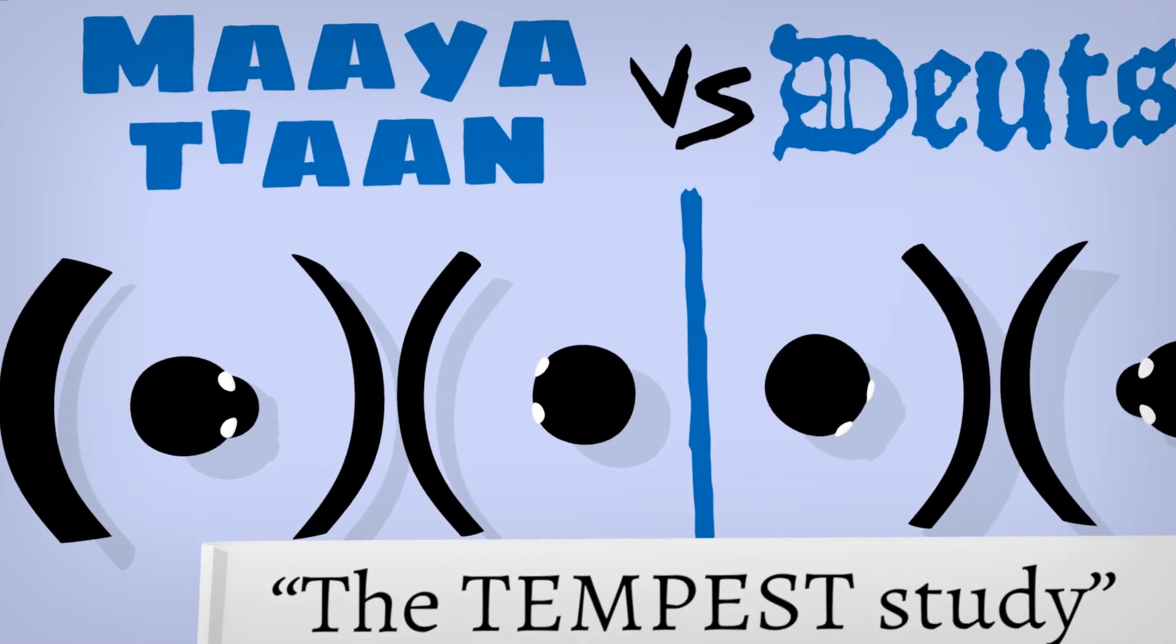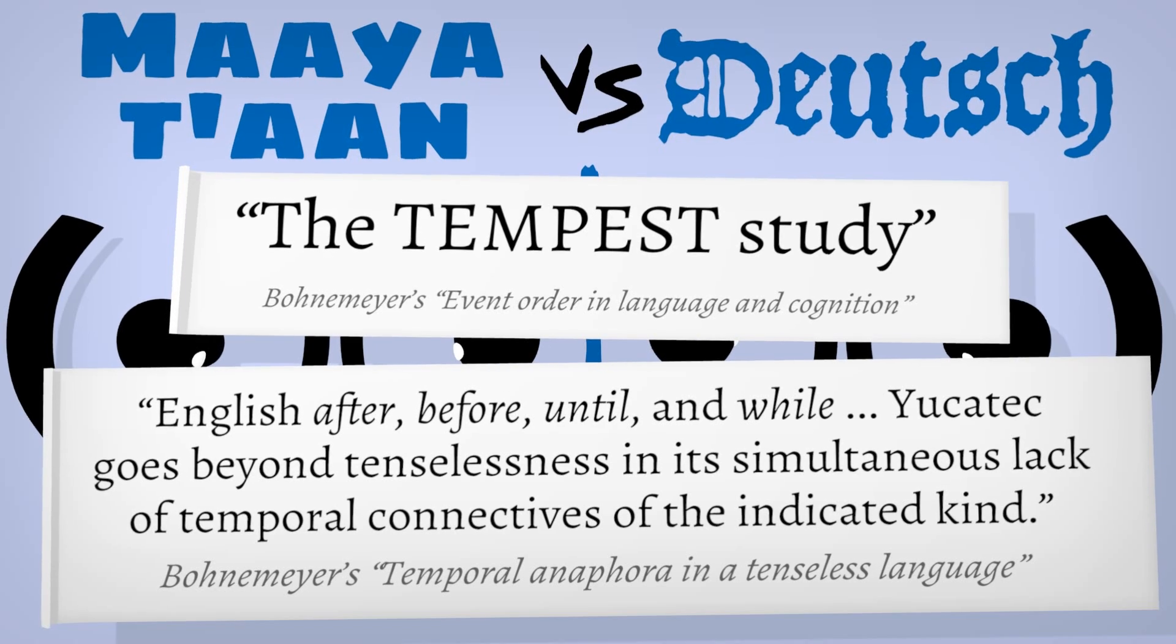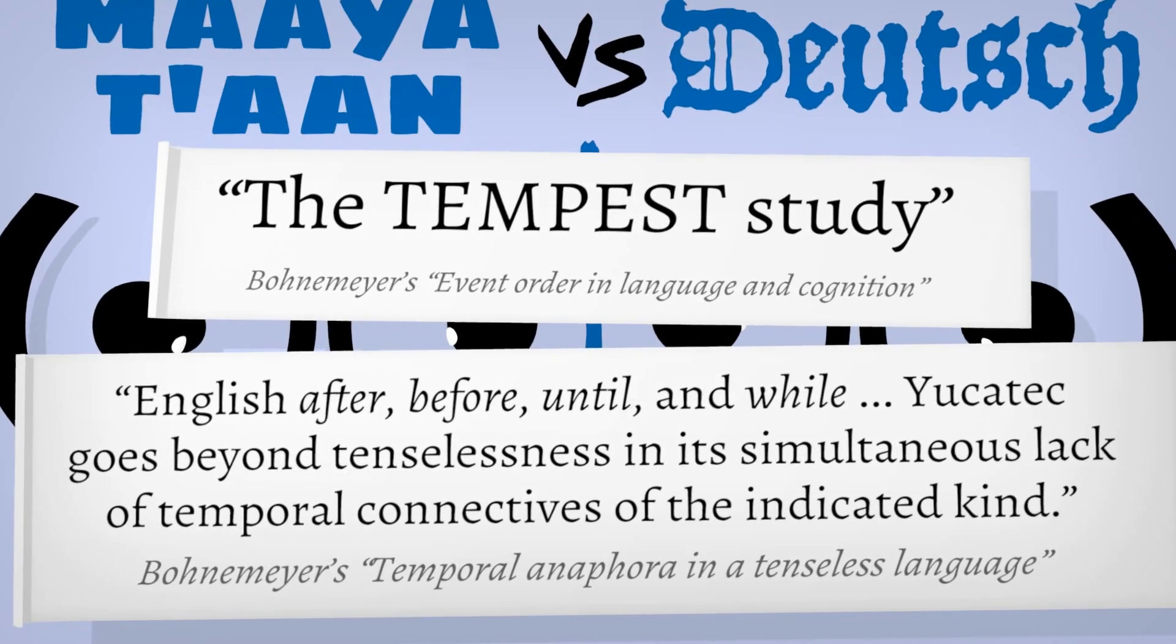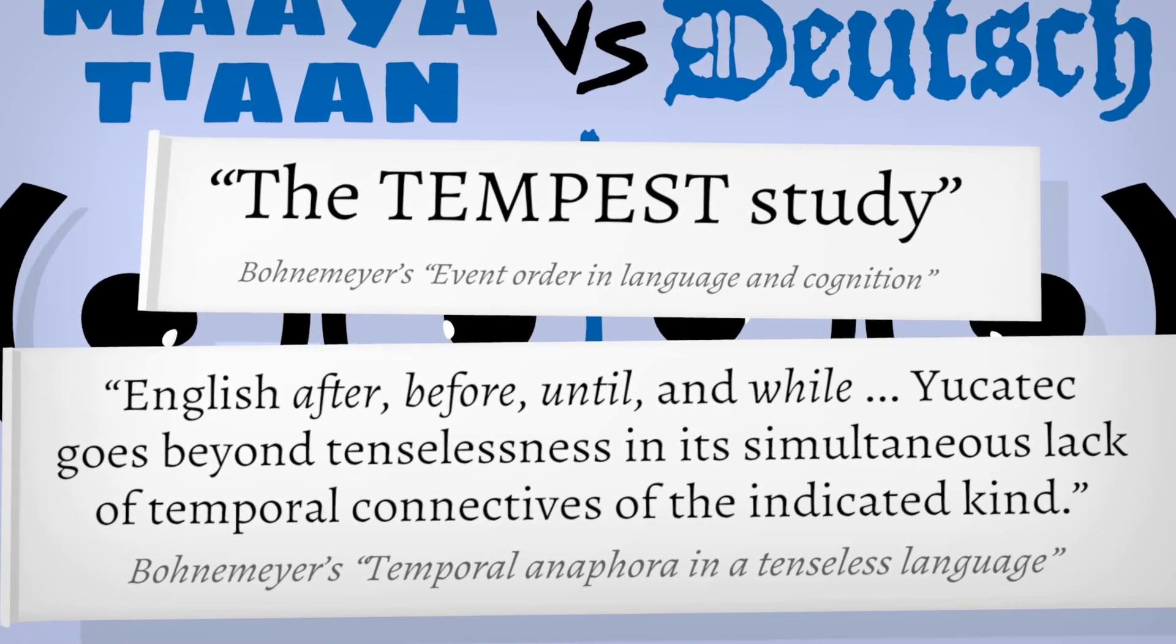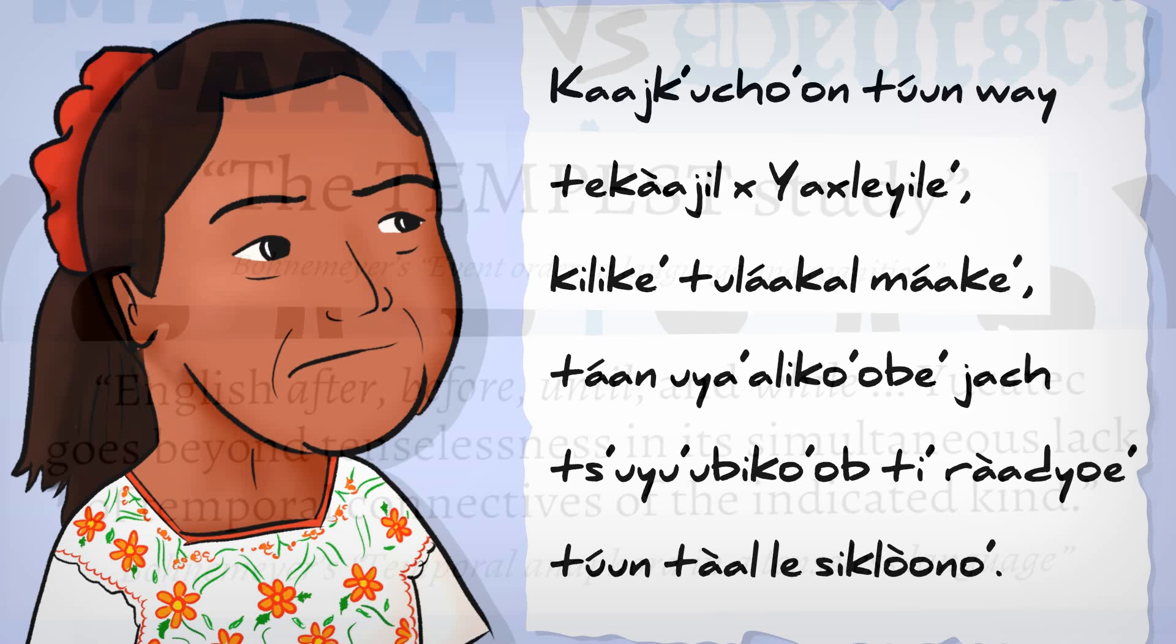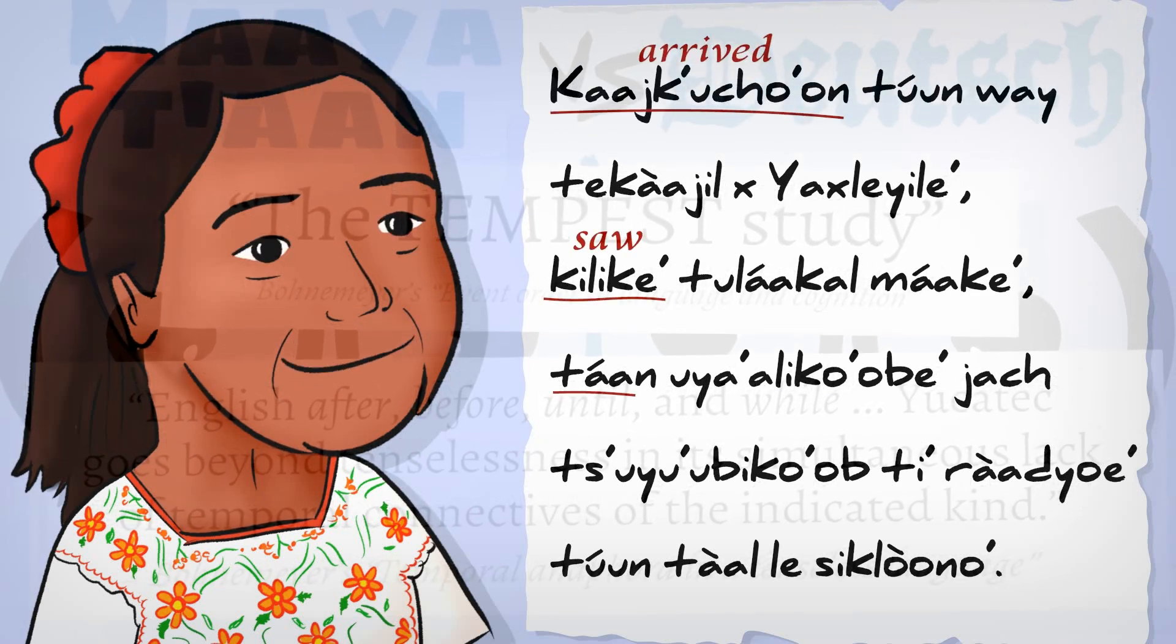See Mayatán, which linguists call Yucatec Maya, is fascinatingly unusual for something it lacks. No tenses, and not even basic time sequence words like before, until, or after. The researcher is eager to test whether this impacts the way they communicate about time.